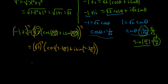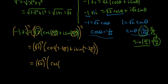This equals the square root of two to the seventh power, times the quantity cosine of twenty-one pi over four plus i sine of twenty-one pi over four.